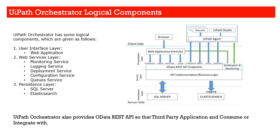UiPath Orchestrator also supports the concept of webhooks — when you want to send notifications or events to third-party systems via webhooks, those things can also be configured. At the core of the service layer or business logic, everything works using OData REST API. OData is an open data specification used for API programming so that communication between different systems works in a symmetric way.